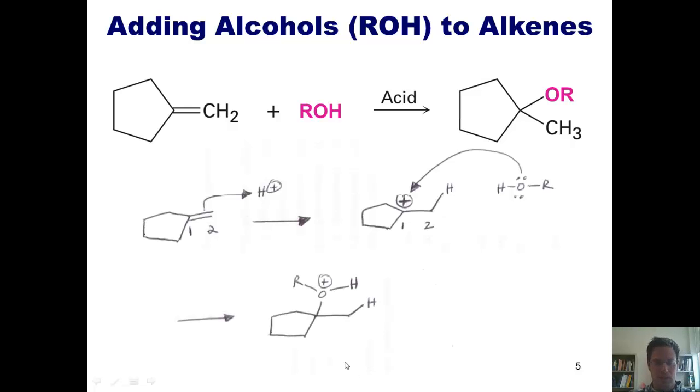As with the previous example, this oxygen still has a full octet. It just has three bonds around it, so it's positively charged because it's sharing more electrons than it usually likes to.